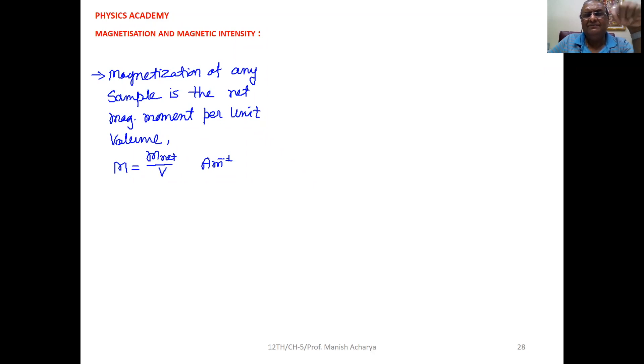Magnetization of any sample is nothing but the net magnetic moment of that sample per unit volume. Suppose the net magnetic moment of a given sample is M_net and its total volume is V. Then,